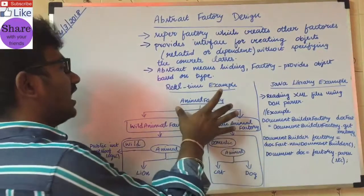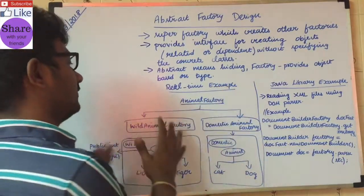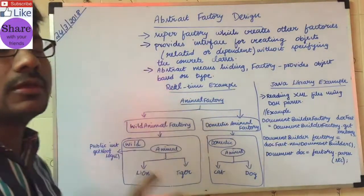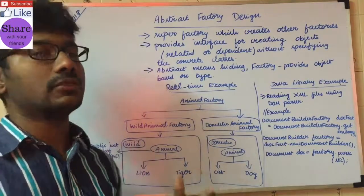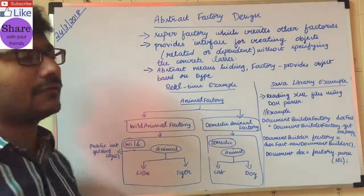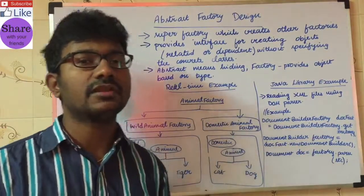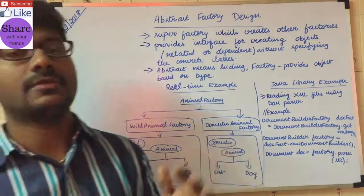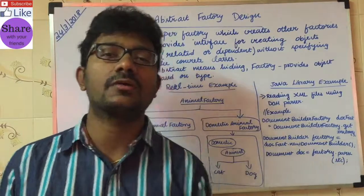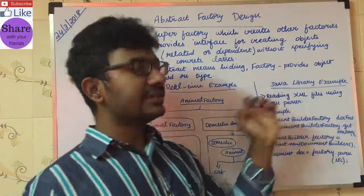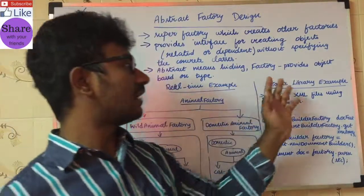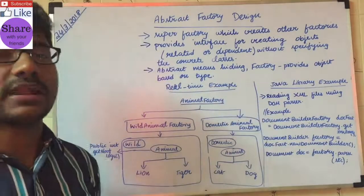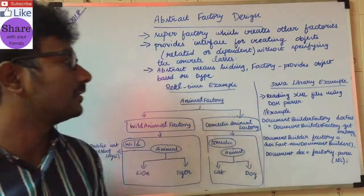So this is the Animal Factory — a domestic animal factory and a wild animal factory. This was a theoretical example along with a real-time example. In the next video we will look at the program details, and we will explore the abstract factory further.